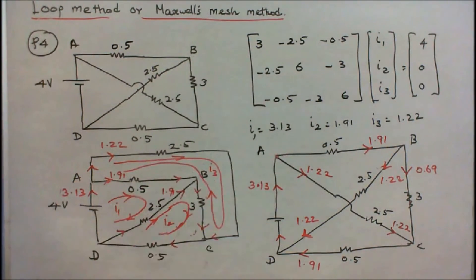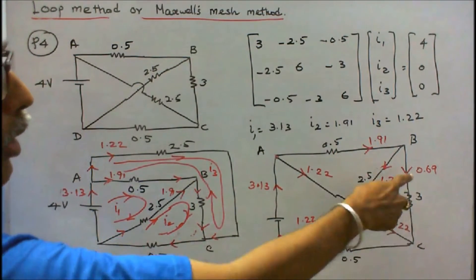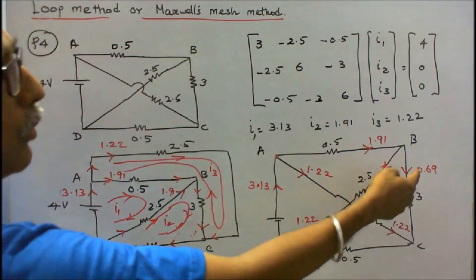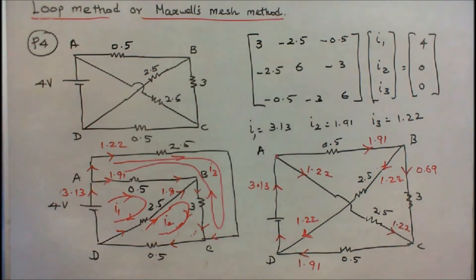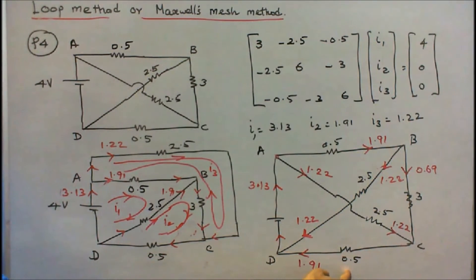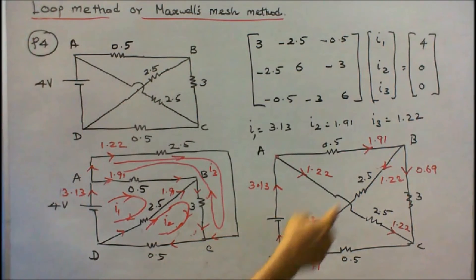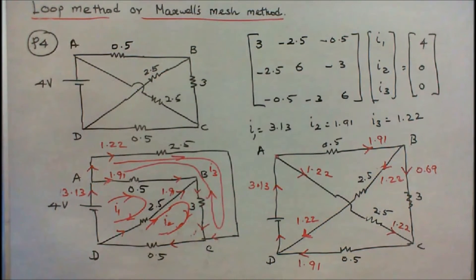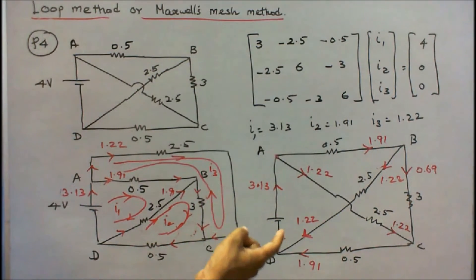Current through AB is 1.91 amps, current through BC is 0.69 amps, current through BD is 1.22 amps. Verification: 1.22 plus 0.69 = 1.91, and 1.22 plus 1.91 = 3.13. Kirchhoff's current law is verified and current flow through each resistor is found.